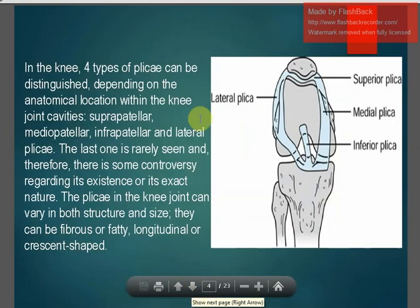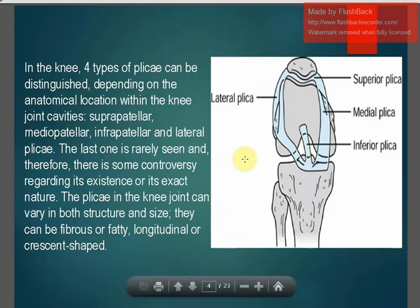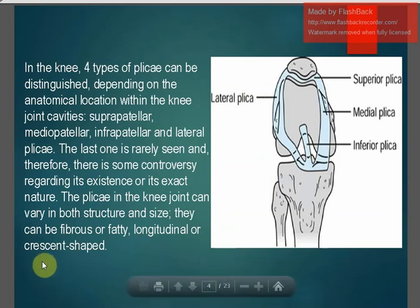There are four types of plica which can be distinguished depending on the anatomical location within the knee joint cavities. They are: suprapatellar, mediopatellar, infrapatellar, and lateral plica. The last one is rarely seen and there is some controversy regarding its existence or exact nature. The plica in the knee joint can vary in both structure and size — they can be fibrous or fatty, longitudinal or crescent-shaped.